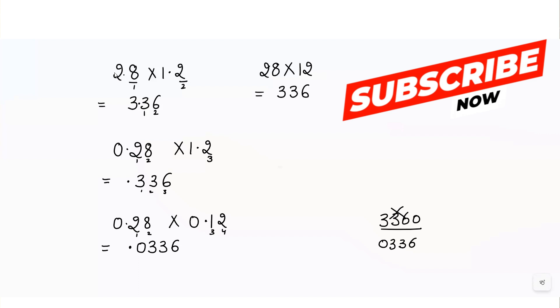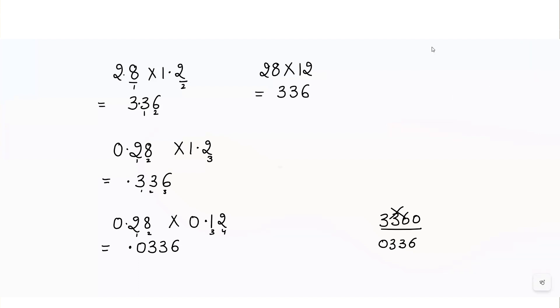This is how we multiply decimal numbers. Now there are practice questions for you: 2.5 × 1.2 and 0.25 × 0.12. What will the answers be? Do write in the comment section. Now let's understand how to divide decimals.